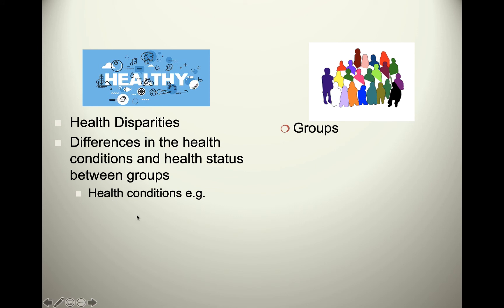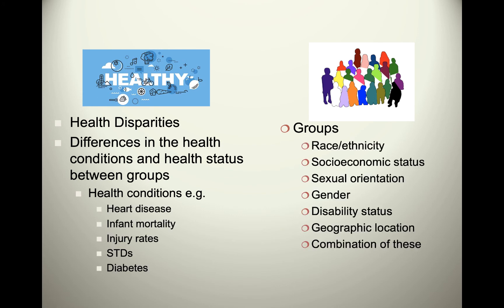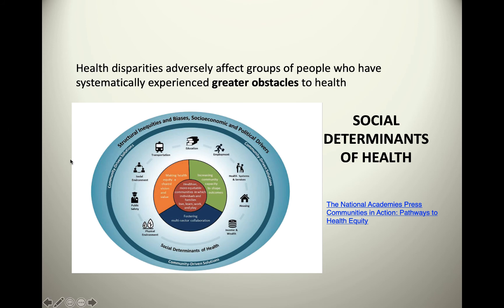We look at health disparities — differences in health conditions — to see where groups are impacted. Considering race, ethnicity, socioeconomic status, sexual orientation, gender, disability status, and geographic location, we see that in the United States some groups are disproportionately impacted by health disparities. Prevalence and incidence rates show us that some communities are suffering more than others, and we ask what social determinants or structural inequities and biases — like transportation, education, employment, and healthcare systems — may be causing these disparities.